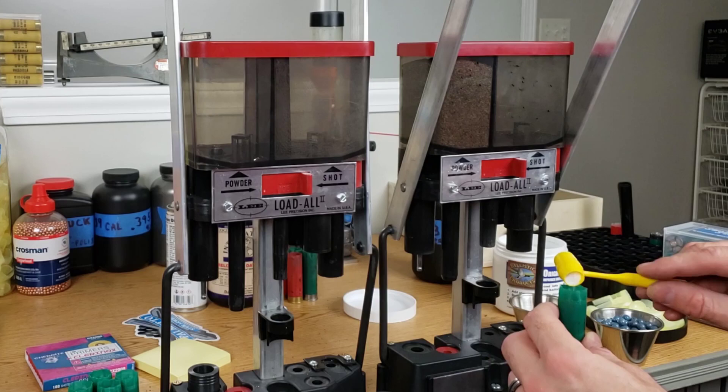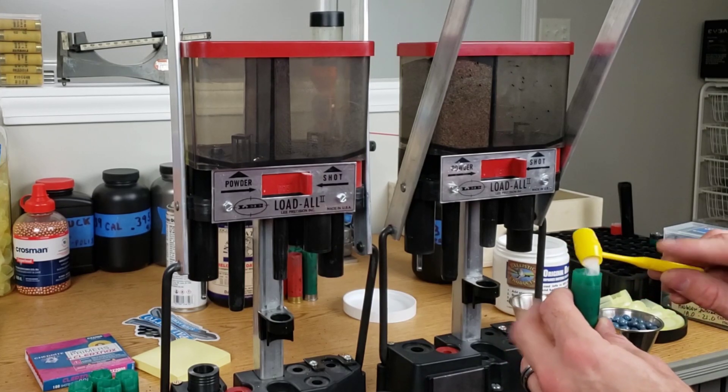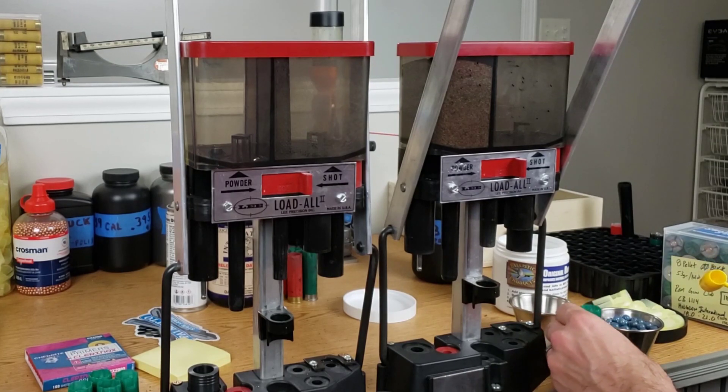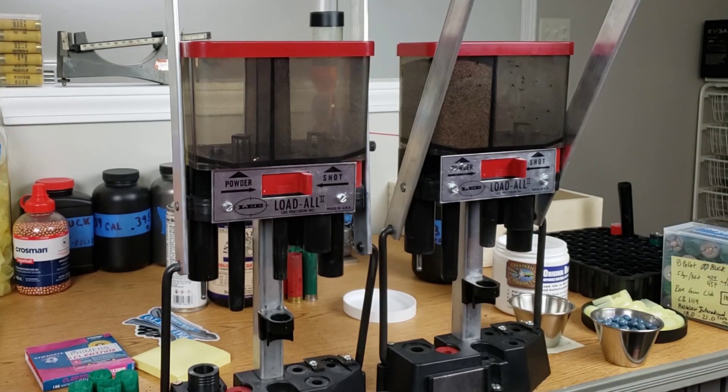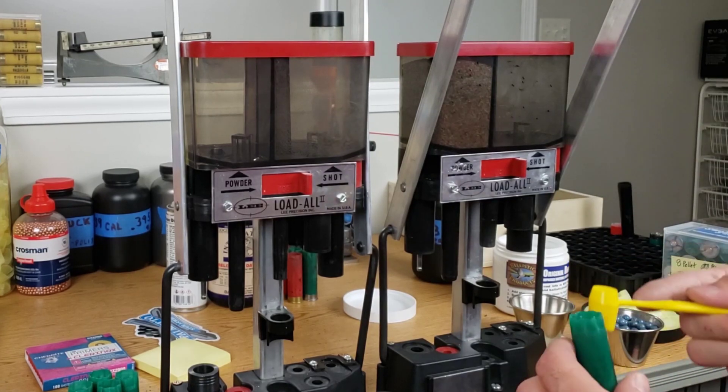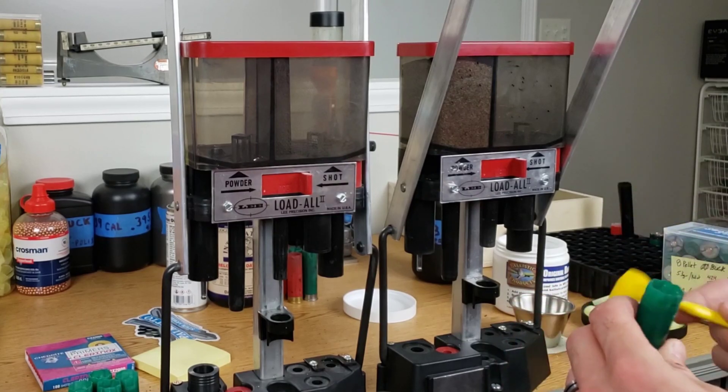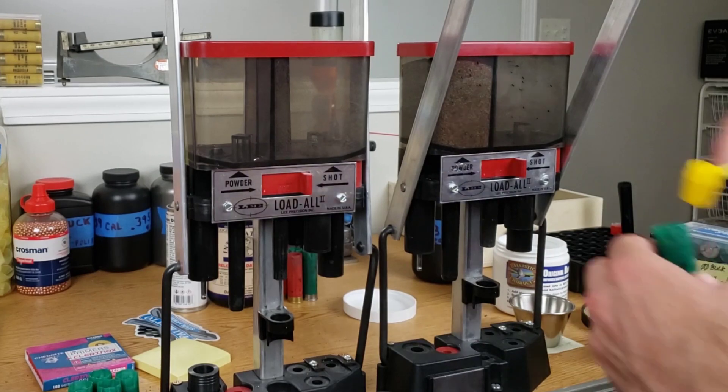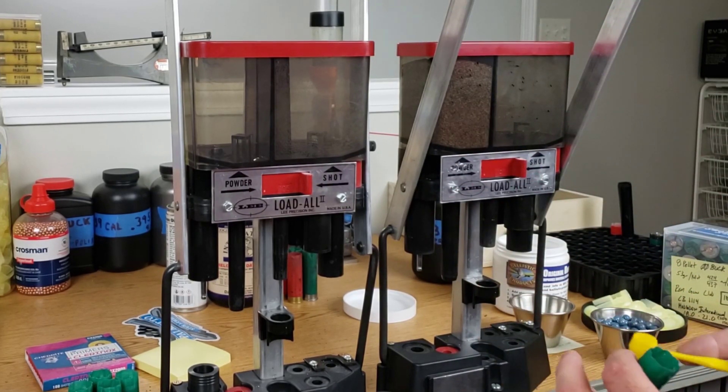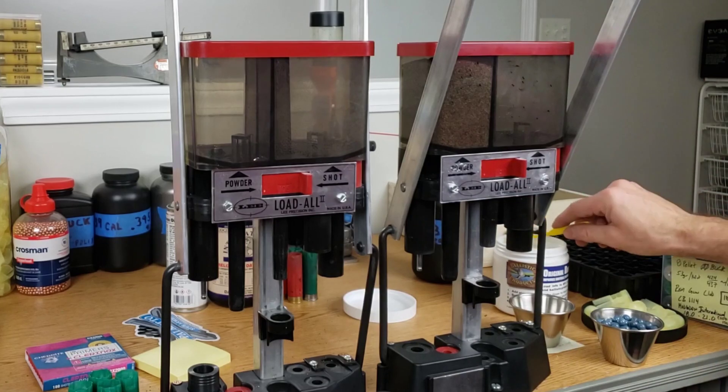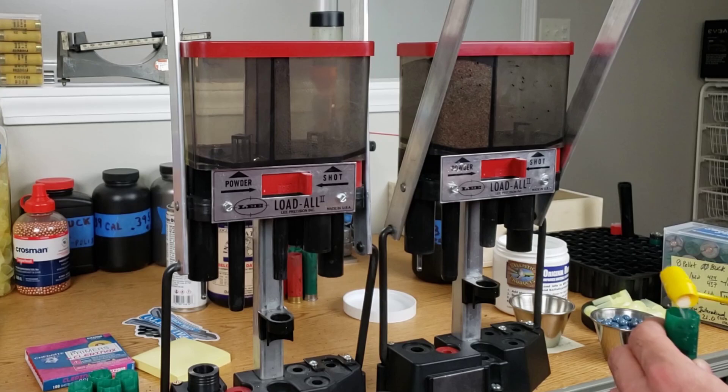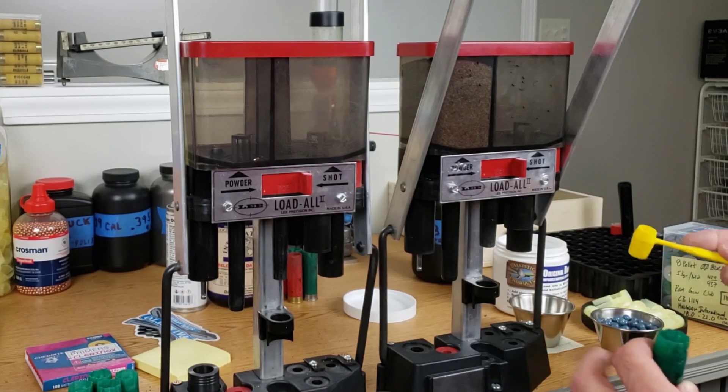I guess we're just going to take our buffer here and fill that up and tap it down. What this does is cushions the buckshot so they don't get deformed, and then when they fly out of your barrel and hit your choke, they get less deformed and you get better accuracy.